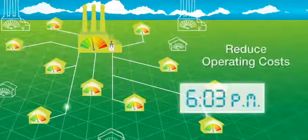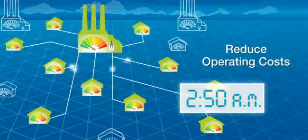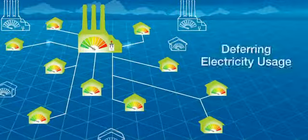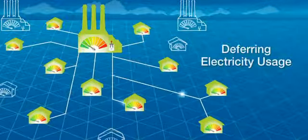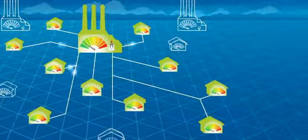As a result, utilities will be able to reduce their operating costs. By deferring electricity usage away from peak hours and having appliances and devices run at other times, electricity production is more evenly distributed throughout the day.